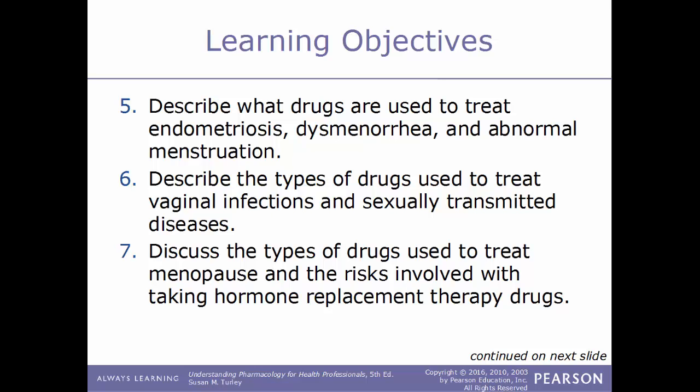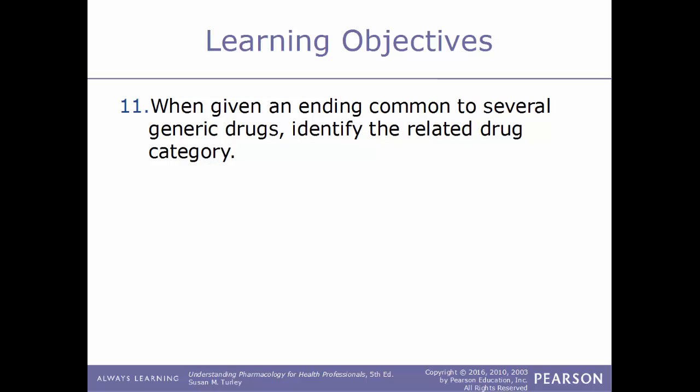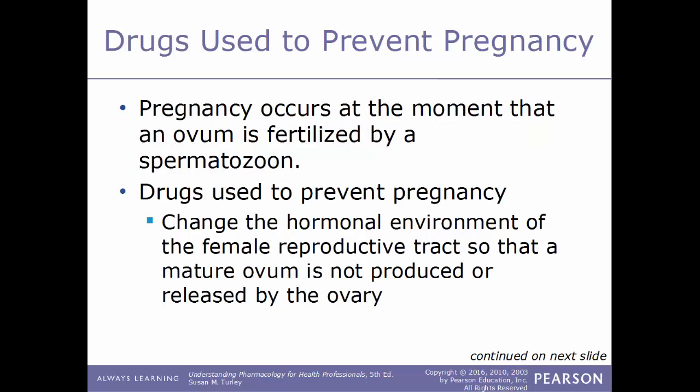Also: describe what drugs are used to treat endometriosis, dysmenorrhea, and abnormal menstruation; describe the various types of drugs used to treat vaginal infections and sexually transmitted diseases; and discuss the types of drugs used to treat menopause and the risks involved with hormone replacement therapy. When given the name of a well-known OBGYN generic drug, identify the trade name, category, and disease it treats. When given a drug category, identify several generic and trade name drugs in that category, and when given a common generic drug ending, identify the related drug category.